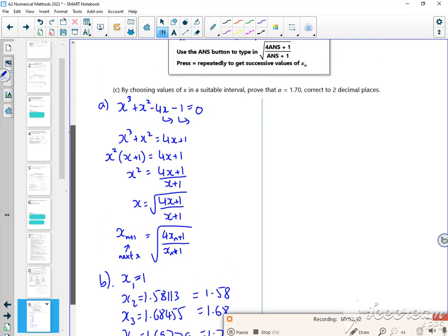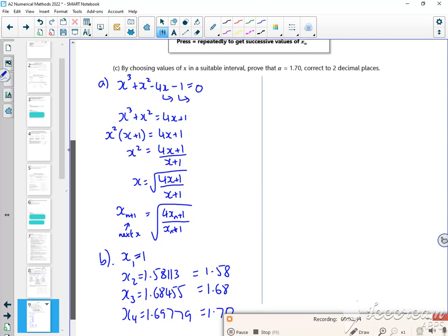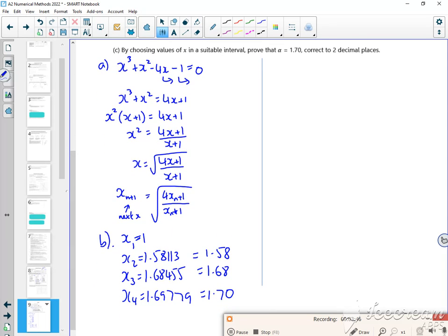So then it says by choosing values of x in a suitable interval, prove that α = 1.70 correct to 2 decimal places. Right, so I need to look at the bounds that round to 1.70. So because it's two decimal places, I need to look at 1.695 through to 1.705. So those numbers will round to 1.70.